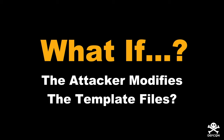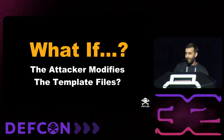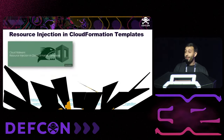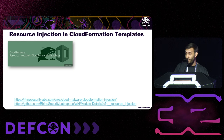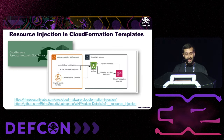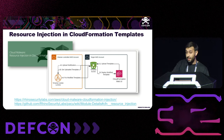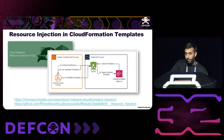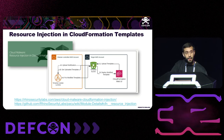If an attacker already has access to the template file, what if they modify it? This is called resource injection in CloudFormation templates — a great technique already published by Rhino Labs, credited to Matthew Filler. The idea is a time-of-check to time-of-use (TOCTOU) behavior in CloudFormation that gives an attacker a window of opportunity to modify template files before CloudFormation tries to deploy them. The attacker can modify the template manually or use a Lambda that automatically backdoors it.